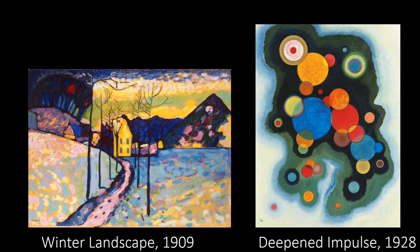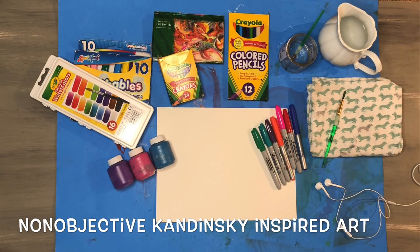Looking at these two artworks by Kandinsky, we can tell they are both abstract, but one goes a step further and becomes non-objective. That one is 'Deepened Impulse' — the picture with different sized and colored circles. We do not know what it's supposed to look like; we can just tell it has different shapes and colors. However, in the 'Winter Landscape' I can tell it is a landscape in wintertime with snow on the ground and trees without leaves, but it doesn't quite look realistic because different colors are used than what we'd see in real life.